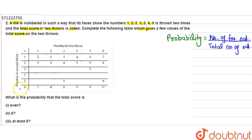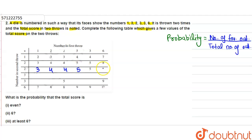We have to first fill this table and then find the probability of: the total score is even, in the second case 6, and in the third case at least 6. Now in this table it shows the sum of the two throws. So 2 plus 1 is 3, 2 plus 2 is 4, 2 plus 2 is 4, 2 plus 3 is 5, and 2 plus 6 is 8.